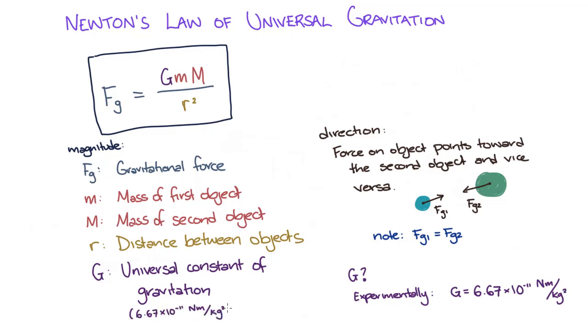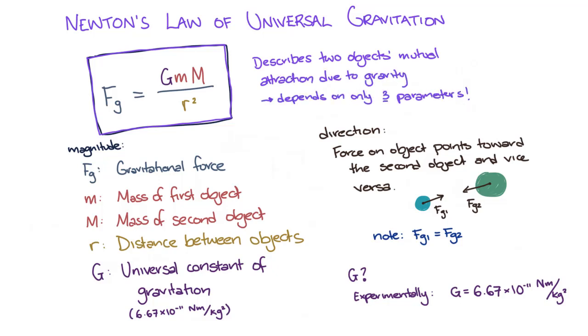We now have the final form of Newton's law of universal gravitation, which describes two objects' mutual attraction due to gravity, and is dependent on only three parameters: each of the two objects' masses, and the distance between the objects.